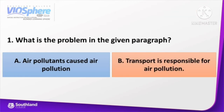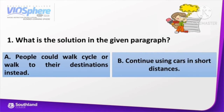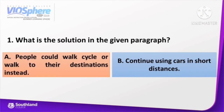Very good! The correct answer is letter B. Transport is responsible for air pollution. What is the solution in the given paragraph? A. People could walk, cycle, or travel to their destinations instead, or B. Continue using cars for short distances. Great job, Southlanders! The correct answer is letter A — people could walk, cycle, or travel to their destinations instead.